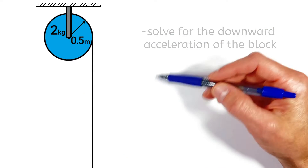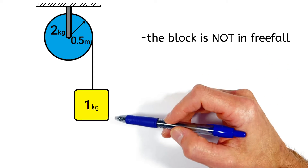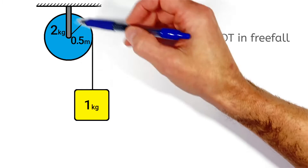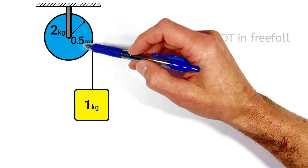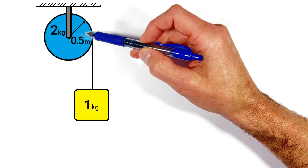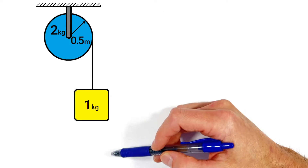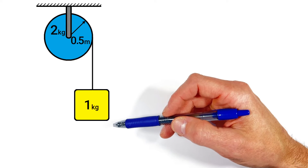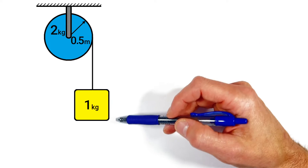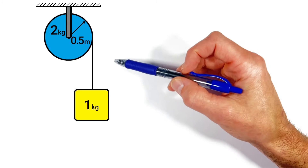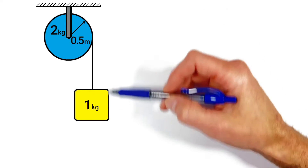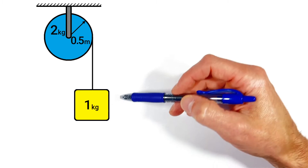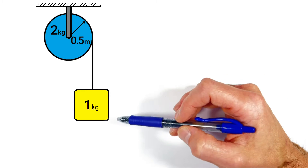The key idea in this problem is that this block is not in free fall. Because it's tied to this string, and because the string is responsible for making this disk spin, the block isn't just going to fall downward at g, or 9.8 meters per second squared. So what we have to do is consider the forces acting on each of these two objects individually in order to solve for the linear acceleration of this block.